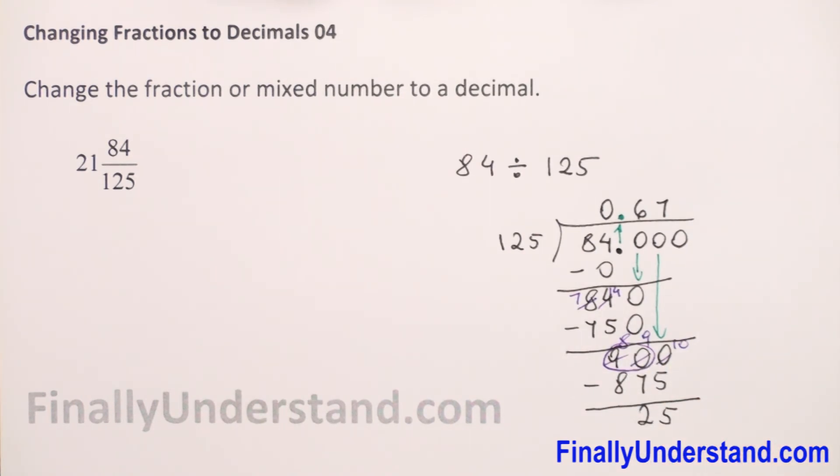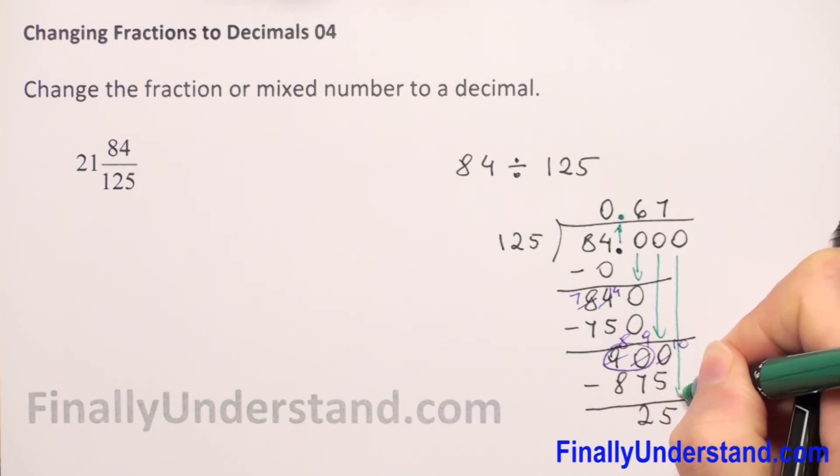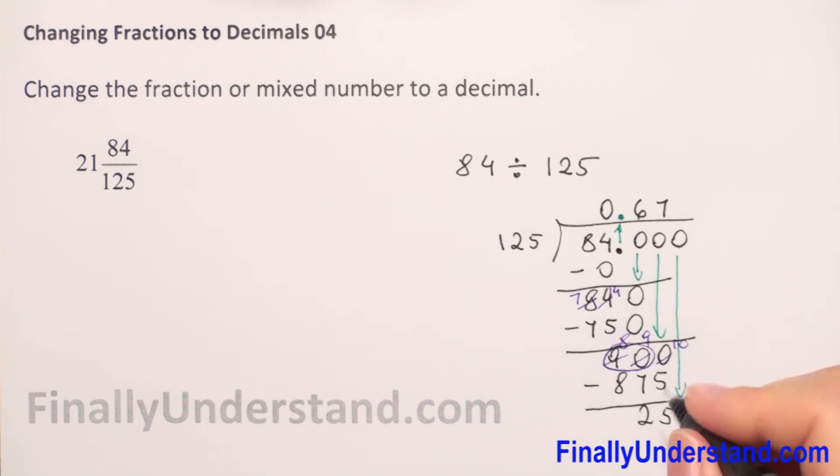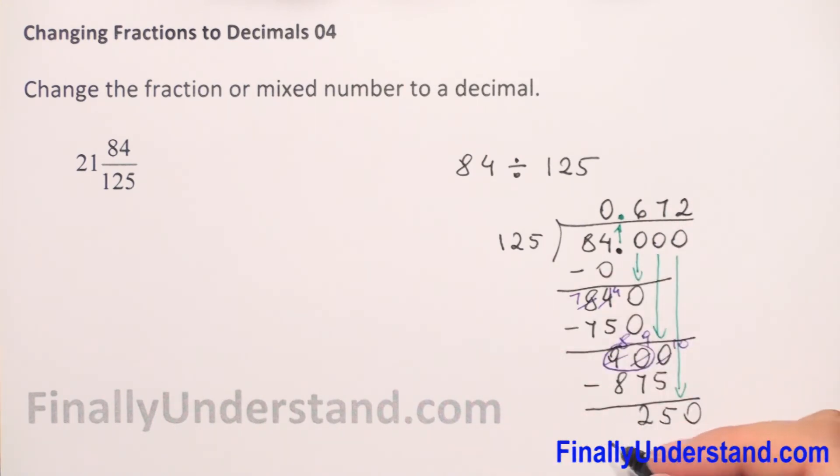What next? We take the next zero down because the remainder is still not zero. We have 250 divided by 125, which is 2. 2 times 125 is 250, so after subtraction the remainder is now zero.